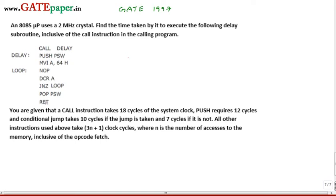The data given for this program: the CALL instruction takes 18 cycles, PUSH requires 12 cycles, and the conditional jump takes 10 cycles if the jump is taking place, or 7 cycles if the condition is not true.